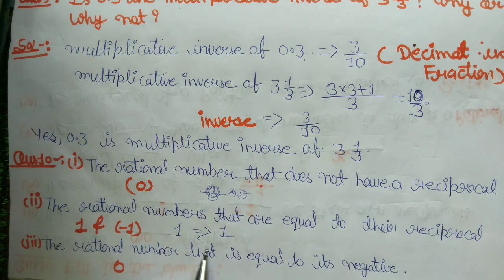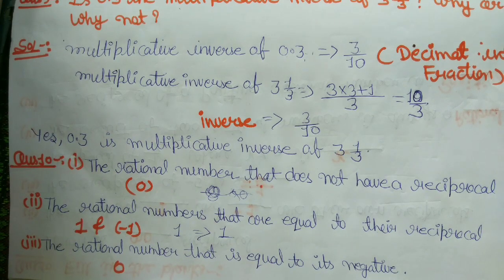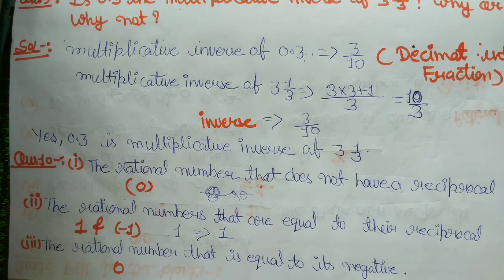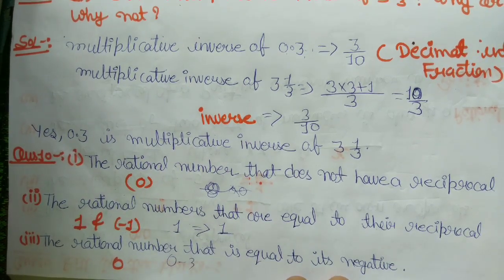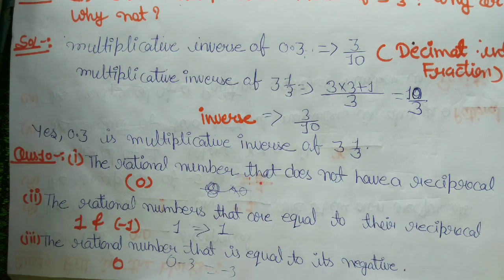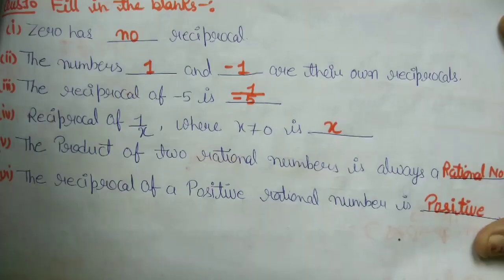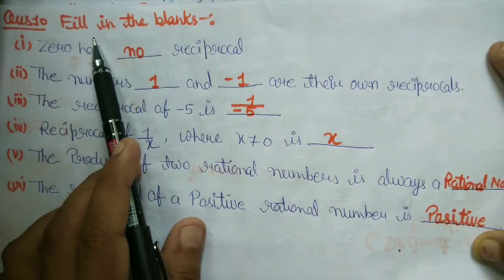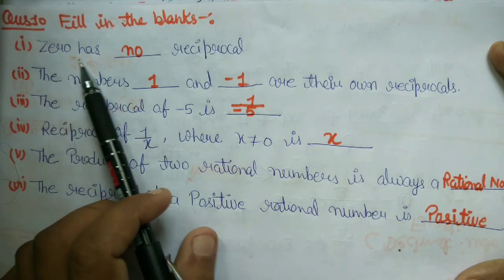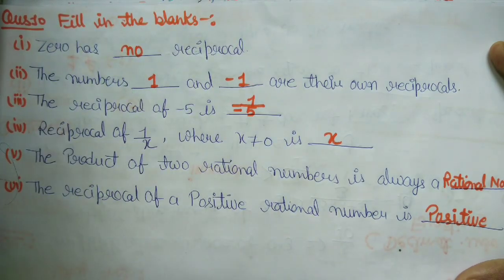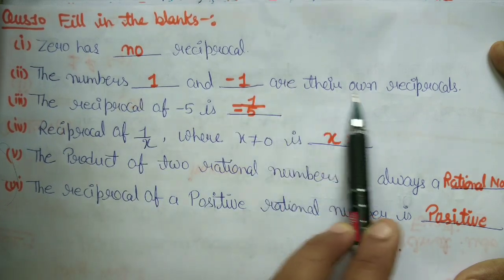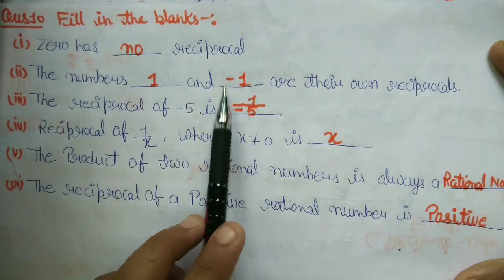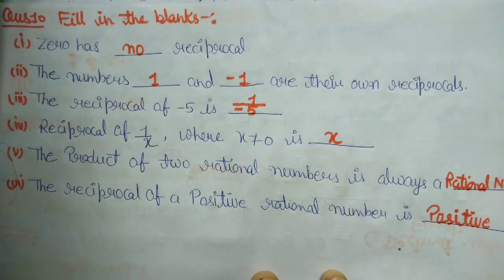The rational numbers that are equal to their own reciprocal — aur rational number jo apne negative ke barabar ho. Zero has no reciprocal, as we discussed. The numbers 1 and minus 1 are their own reciprocals — one and minus one ka same reciprocal hota hai, khud wo apne reciprocal hote hain.